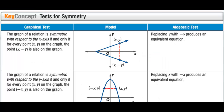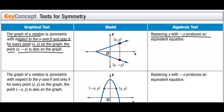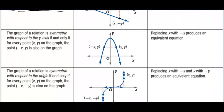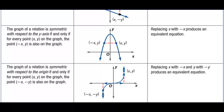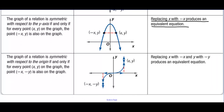Test for symmetry. The graph of a relation is symmetric with respect to the x-axis if and only if, for every point (x, y) on the graph, the point (x, negative y) is also on the graph — meaning replacing y with negative y produces an equivalent equation. For y-axis symmetry, replacing x with negative x produces an equivalent equation. For origin symmetry, replacing both x with negative x and y with negative y produces an equivalent equation.